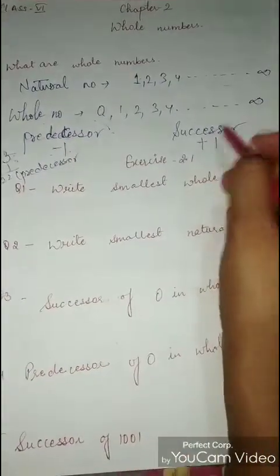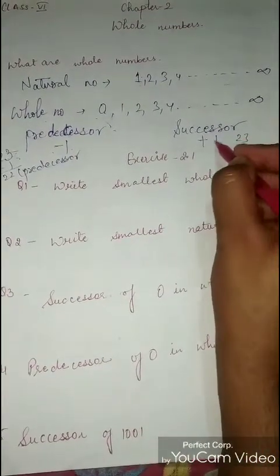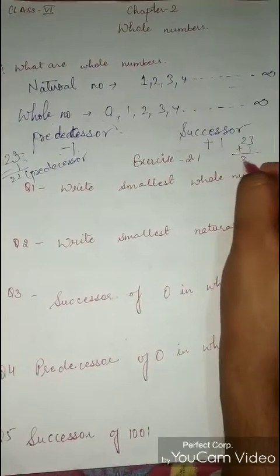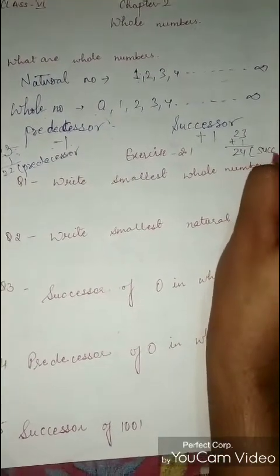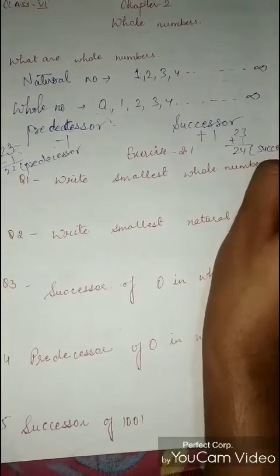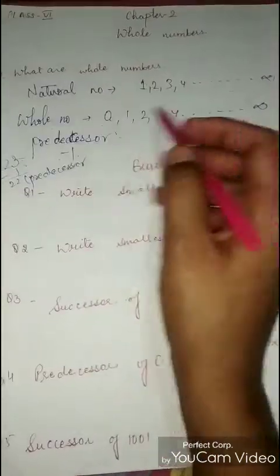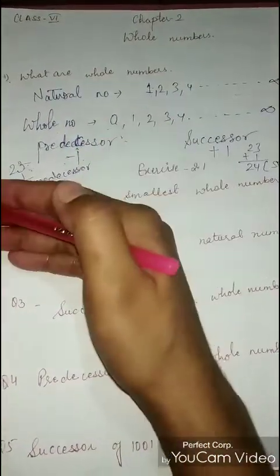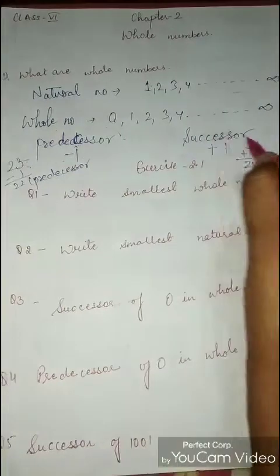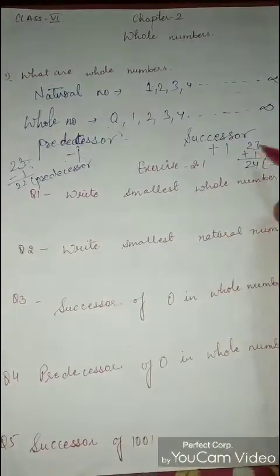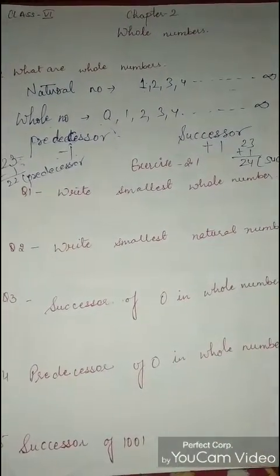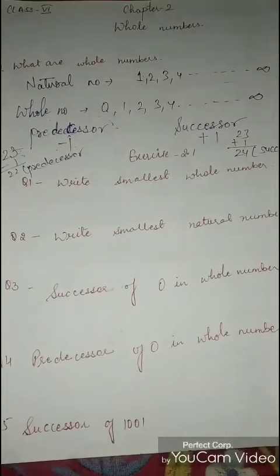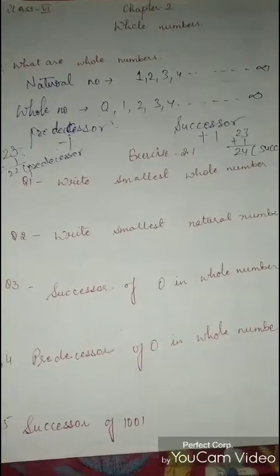In successor, if 23 is given to you and you have to find the successor, you will add one. So 24 is the successor. Predecessor is a number less than the given number, and successor is greater than the given number. Now let's start with the exercise.